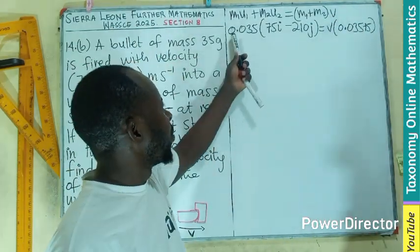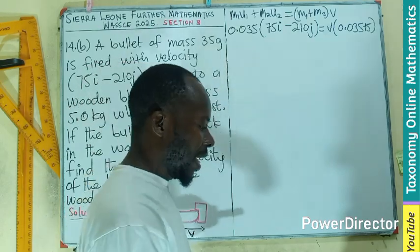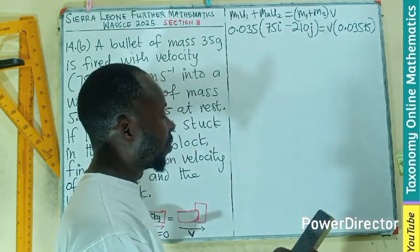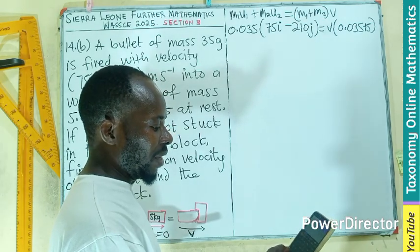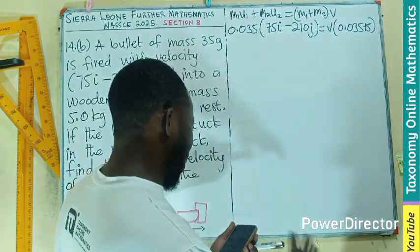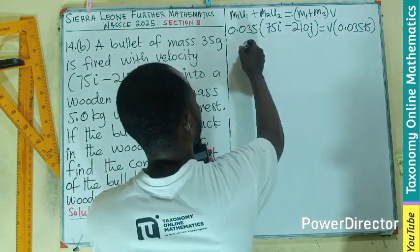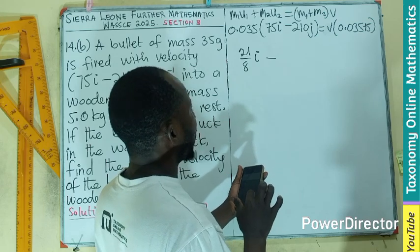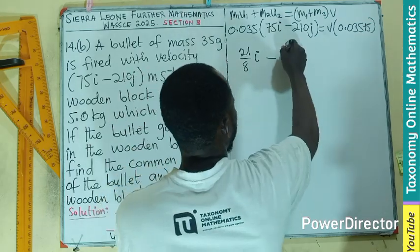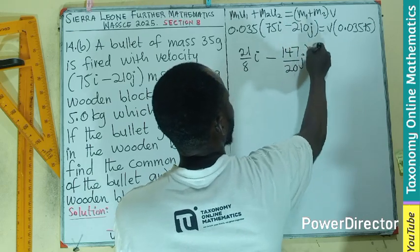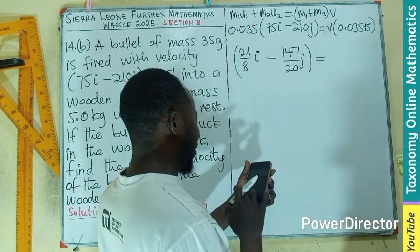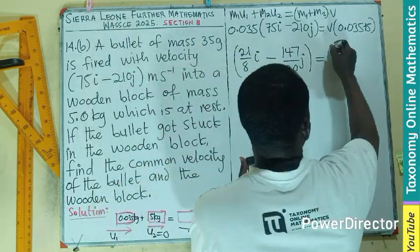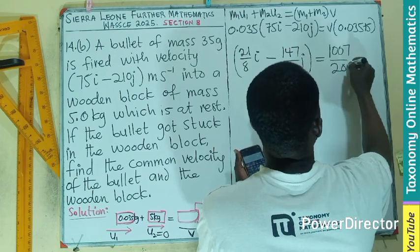We need to multiply the scalar by the components. Using our calculator, 0.035 multiplied by 75 gives us 21/8 i. Then 0.035 multiplied by 10 gives 147/20 j. So the left side is 21/8 i minus 147/20 j. Adding 0.035 and 5 gives 1007/200 on the right side, so we have 1007/200 times V.